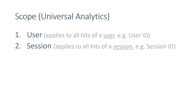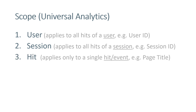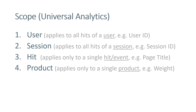Another scope is session — it is applied to all events and page views of that session. Session ID is one example. Then there's hit scope, which applies only to that specific event. For example, when a visitor loads a page, you could send a page category dimension — that's hit-scoped because it applies only to that page, and the value changes on the next page. Finally, there is product scope. If you're tracking ecommerce data and sending product information, you might want to send additional info like product size or product weight, since a single purchase may contain several products, each with different dimension values.